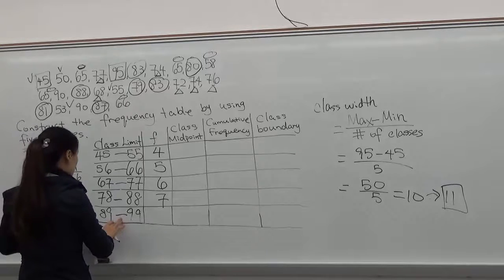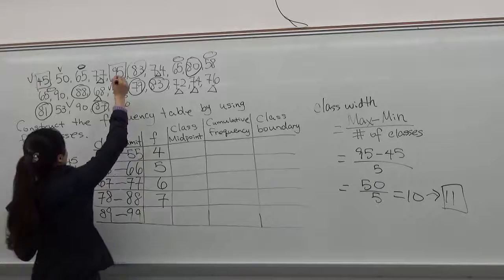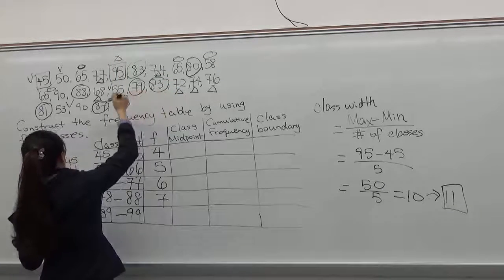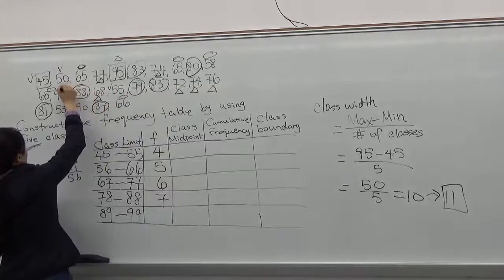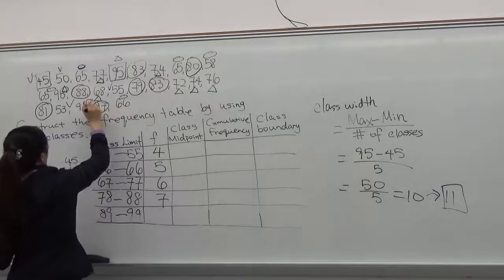And the last one, the last class are numbers between 89 to 99. This is 1, and 2, 3, only those 3.